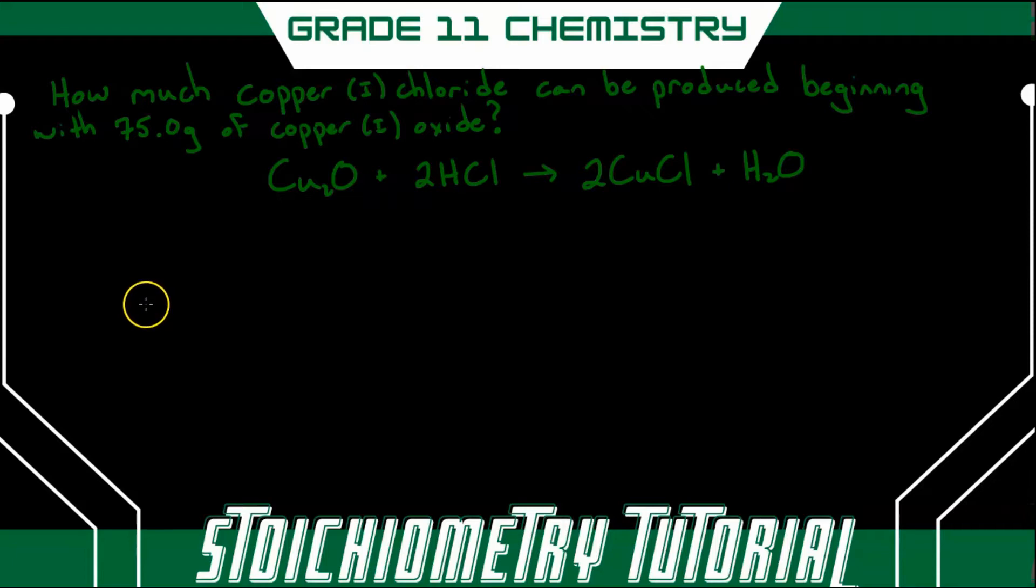So here's the problem we're going to work with. How much copper 1 chloride can be produced beginning with 75 grams of copper 1 oxide? So here's our reaction. We have copper 1 oxide mixing with hydrogen chloride, giving us copper 1 chloride and water.